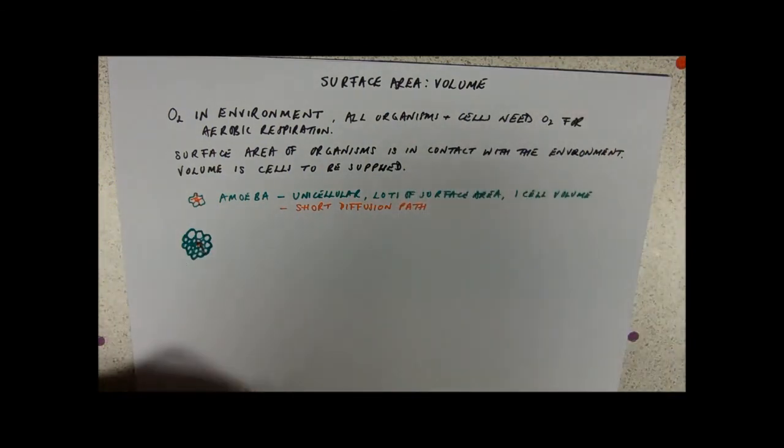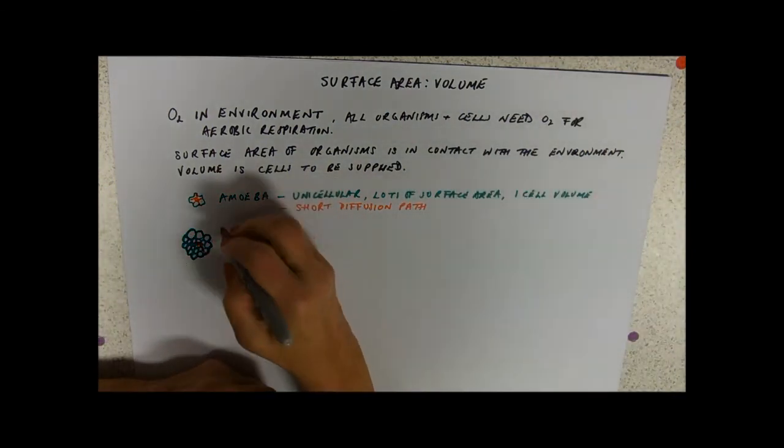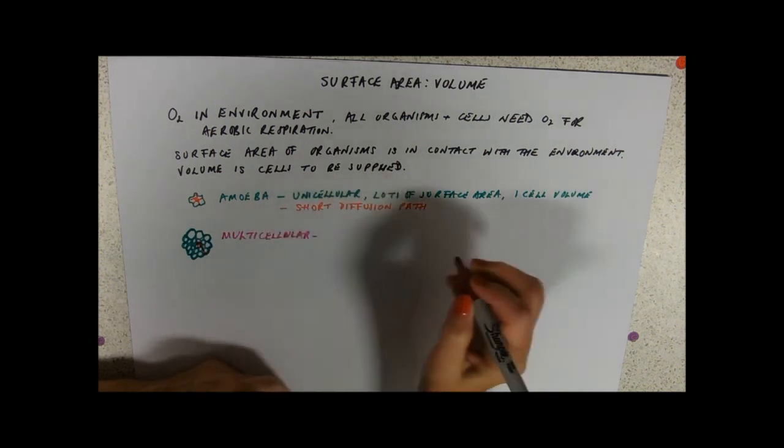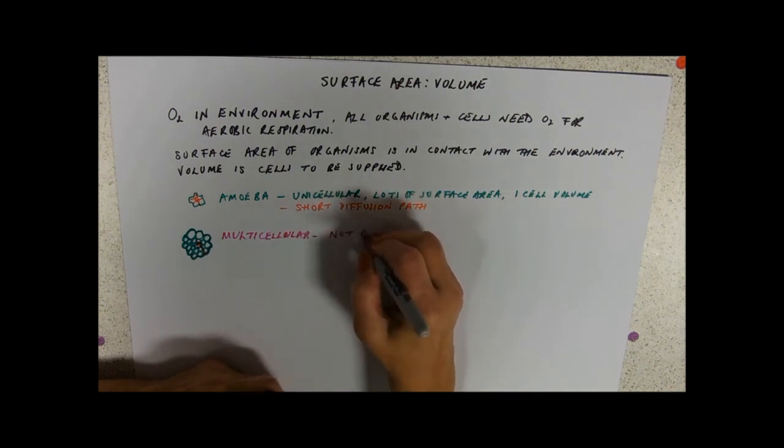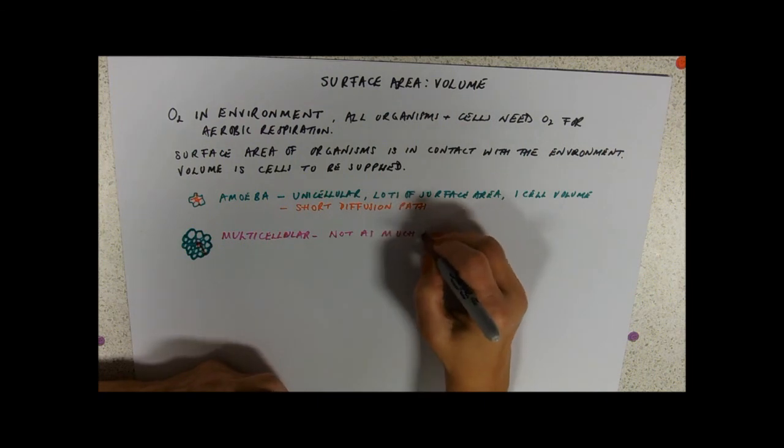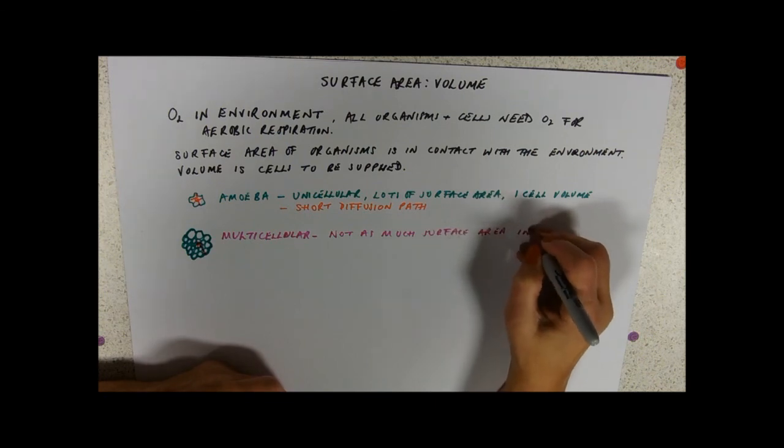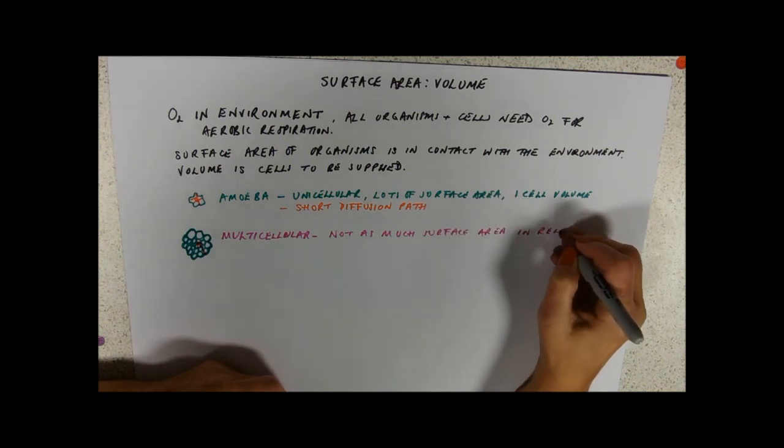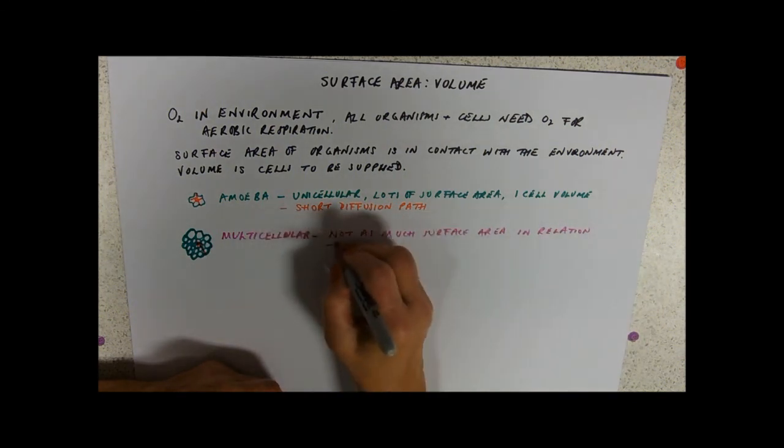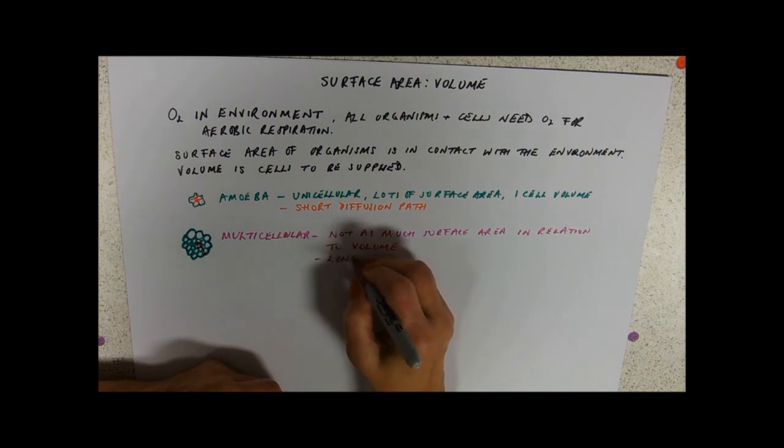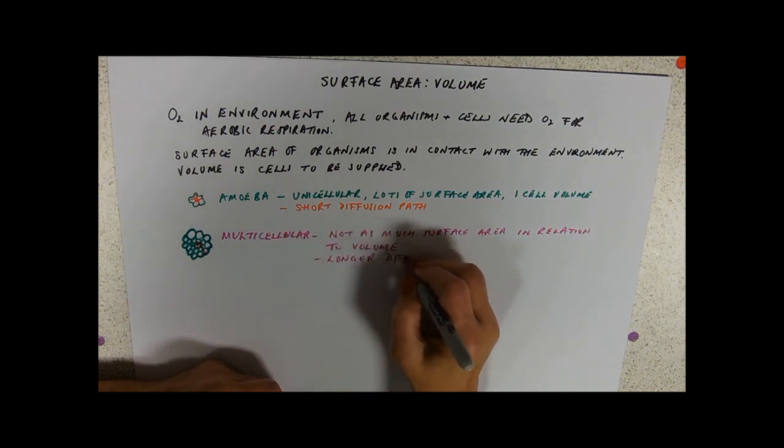So, for multicellular organisms, we've got not as much surface area in relation to volume and longer diffusion paths.